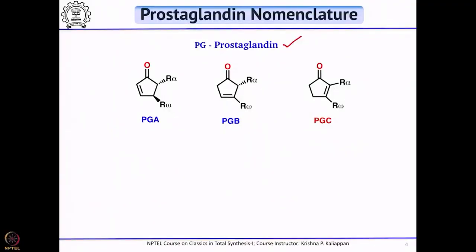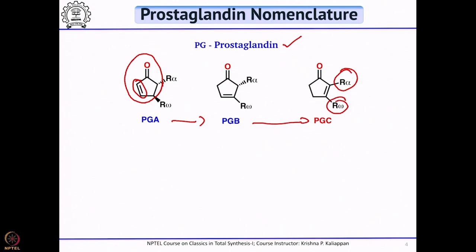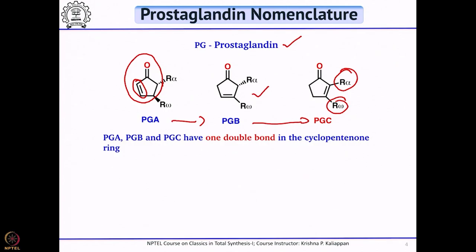PGA, PGB, and PGC all have a cyclopentenone — you can see the 5-membered ring is in the form of cyclopentenone. But the double bond position changes from A to B to C. When you go from A to B to C, the position of the double bond also migrates. PGA is an alpha-beta unsaturated ketone with a disubstituted double bond, PGB has a trisubstituted double bond, and PGC has a tetrasubstituted double bond. The position of the double bond gives their name.